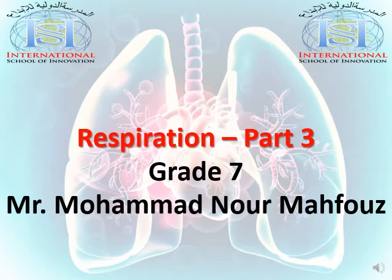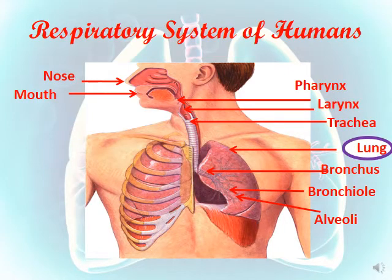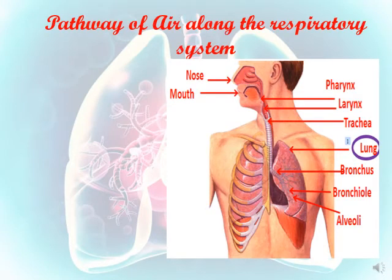Hello Grade 7 students. In this video we'll start about respiration Part 3. Before we start, we have to go through some revision about respiration in humans and in some insects. The respiratory system of humans is composed of different organs: mouth, nose, pharynx, larynx, trachea, and the lungs. The lungs represent the most important organ throughout the respiratory system of humans.